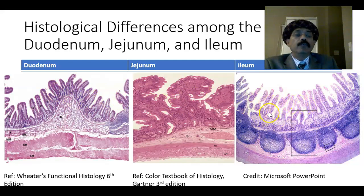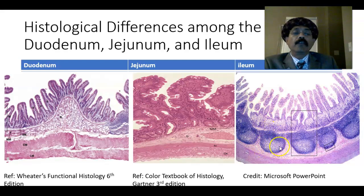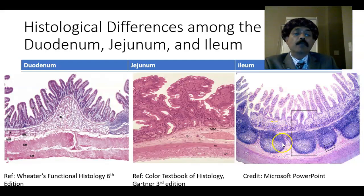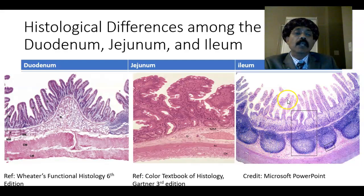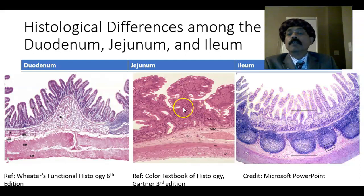The number of goblet cells is more in the jejunum than in the duodenum. If you compare this with the ileum, we will find submucosal lymphatic nodules — we call them Peyer's patches. They are present in the lamina propria and may extend into the submucosa. These lymphatic nodules have a germinal center — the light area — and the villi are the shortest and the goblet cell count is highest in the ileum.